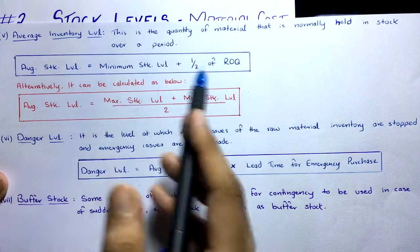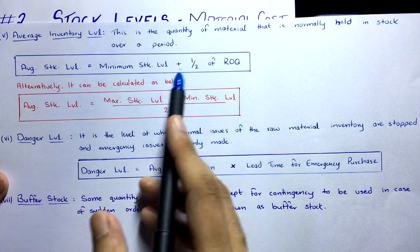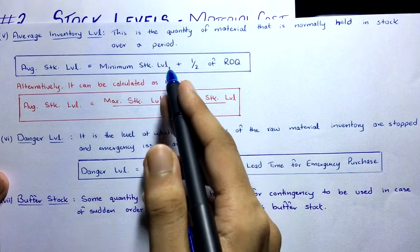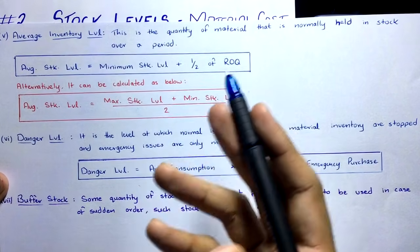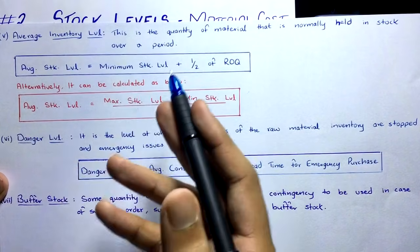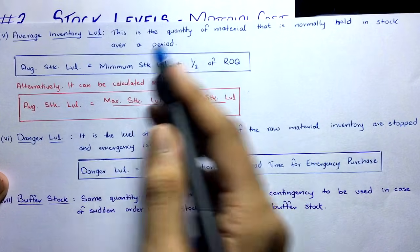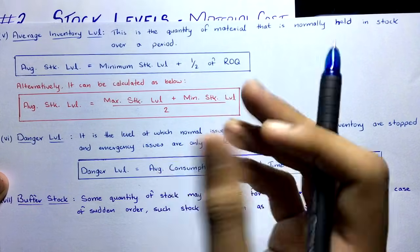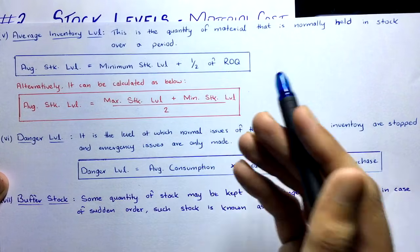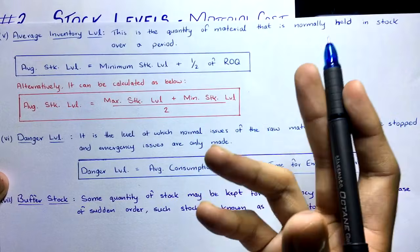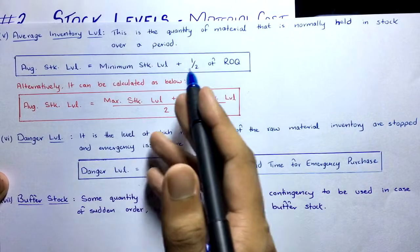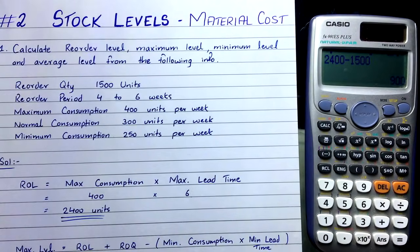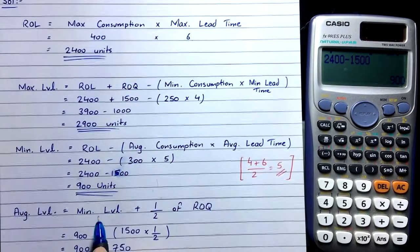Using Formula 1: the logic is that minimum stock will always be present in the warehouse, and on average half of the reorder quantity will also be held at any given time. So Average Stock Level = Minimum Stock Level + ½ × Reorder Quantity.